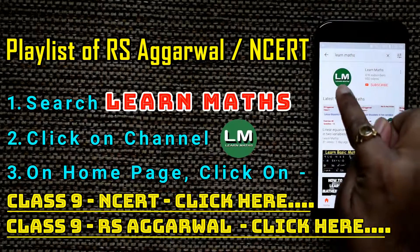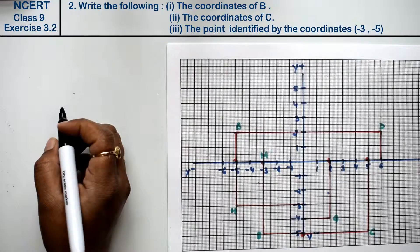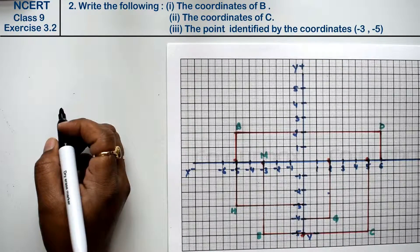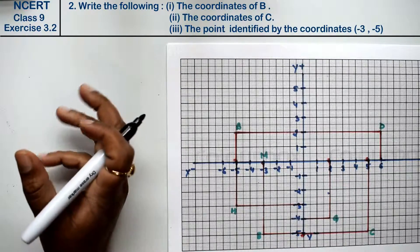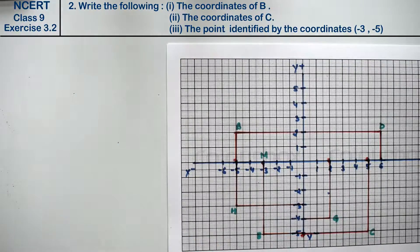Let's do question number 2 of exercise 3.2, that is coordinate geometry. Question number 2 is: see figure 3.14 and write the following. Friends, we have this figure.